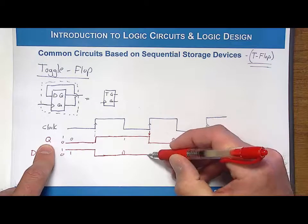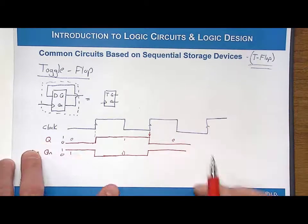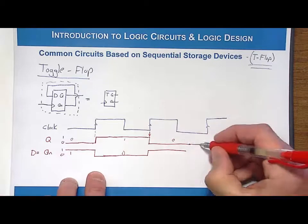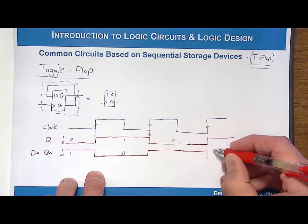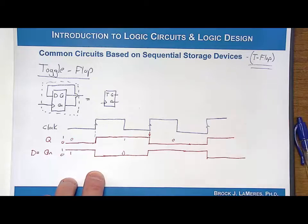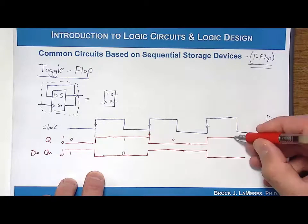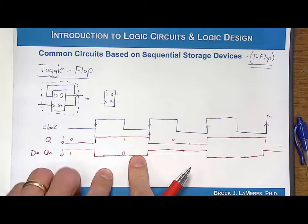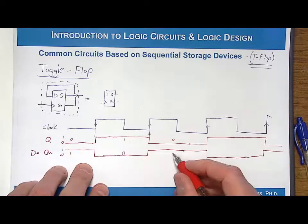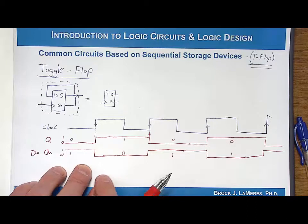That is going to transition down to a zero, and then QN, Q bar, will transition to the opposite of Q. Look at what's happening. I'm transitioning every rising edge of a clock. I will toggle back and forth. That's where the toggle flop comes from.